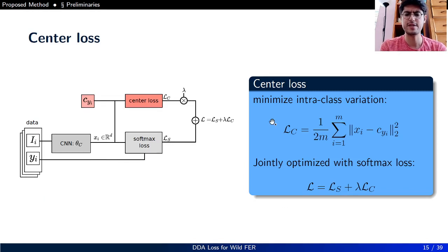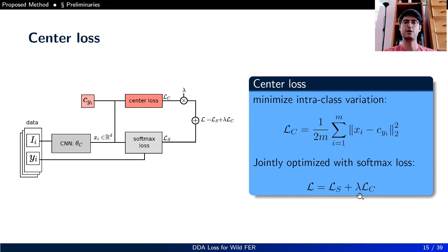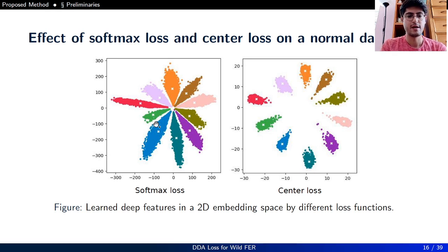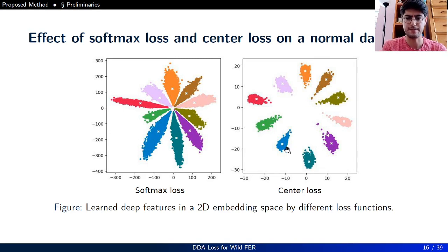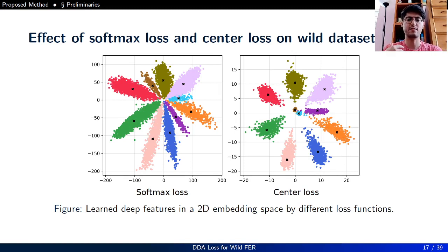Center loss minimizes intra-class variation by penalizing the distance between the deep feature and its corresponding class center in the embedding space, and is jointly optimized with softmax loss, where the hyperparameter lambda controls the contribution of center loss to the total loss. On a balanced dataset like MNIST, softmax loss alone does not achieve very good discrimination, but center loss creates compact clusters that are well separated. However, when dealing with a wild dataset, even center loss struggles and we have minority classes overlapping in the embedding space.